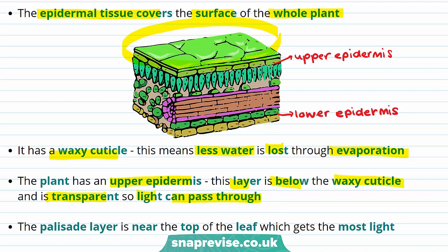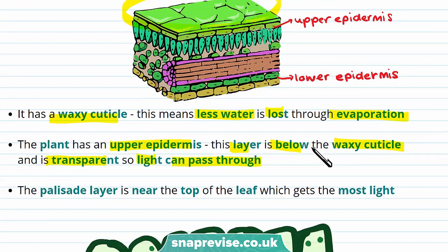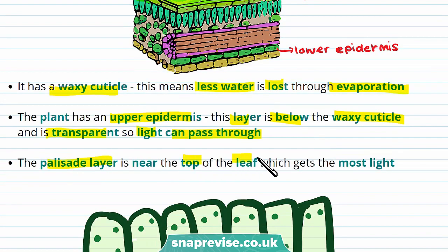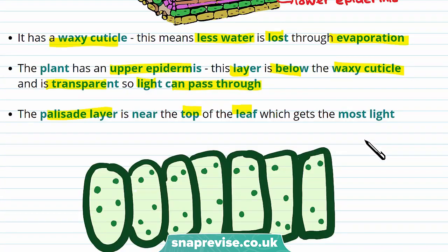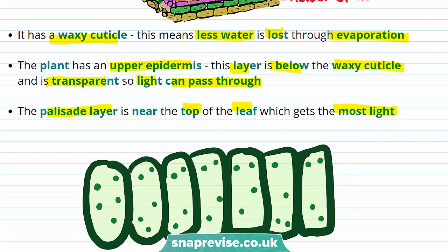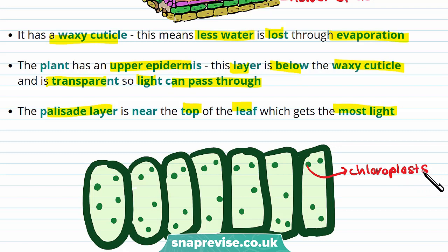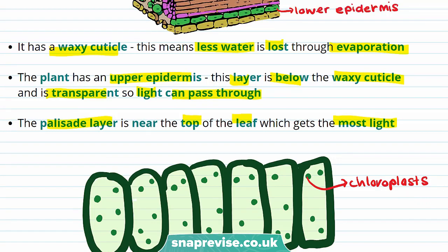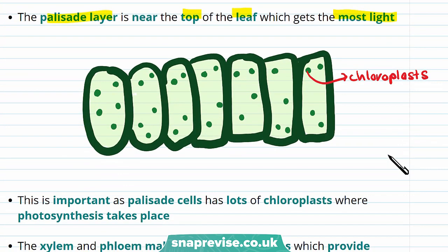The palisade layer is near the top of the leaf, which means it gets the most light. This diagram shows a palisade layer with lots of little green dots in the cell — these are chloroplasts, which are where photosynthesis takes place. These cells have lots of chloroplasts to maximise photosynthesis.